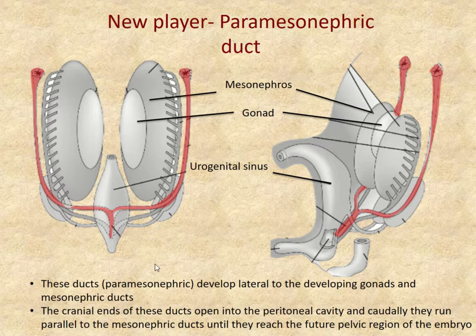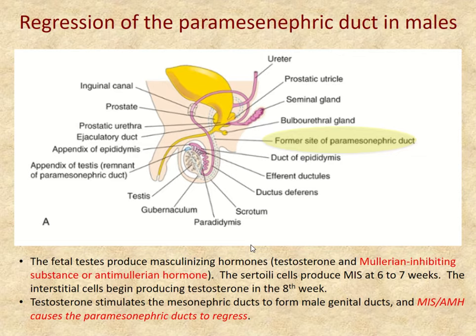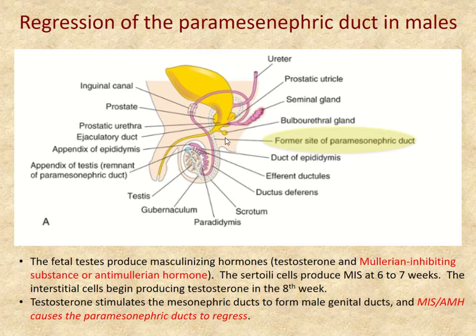The paramesonephric ducts join from one side to another, meeting in the midline. In the male, the paramesonephric duct is supposed to completely regress, and this happens because of Müllerian inhibiting substance secreted by Sertoli cells. This substance is crucial — if it's absent, the paramesonephric duct will fail to regress. The figure shows the paramesonephric duct regressing in the male.